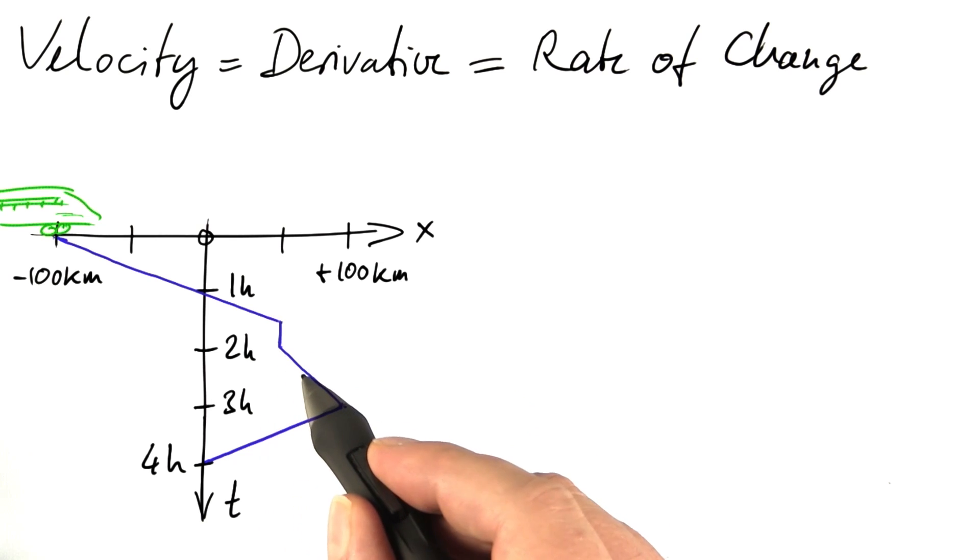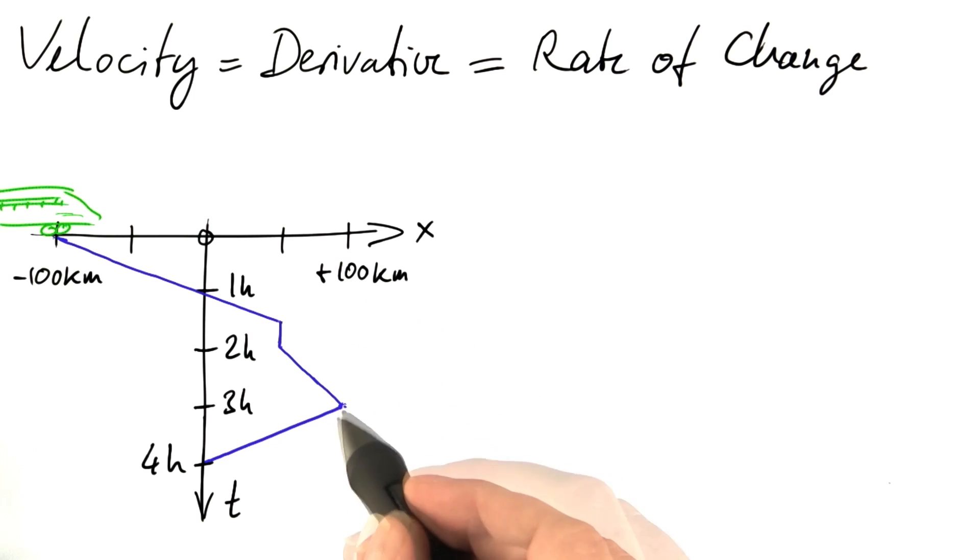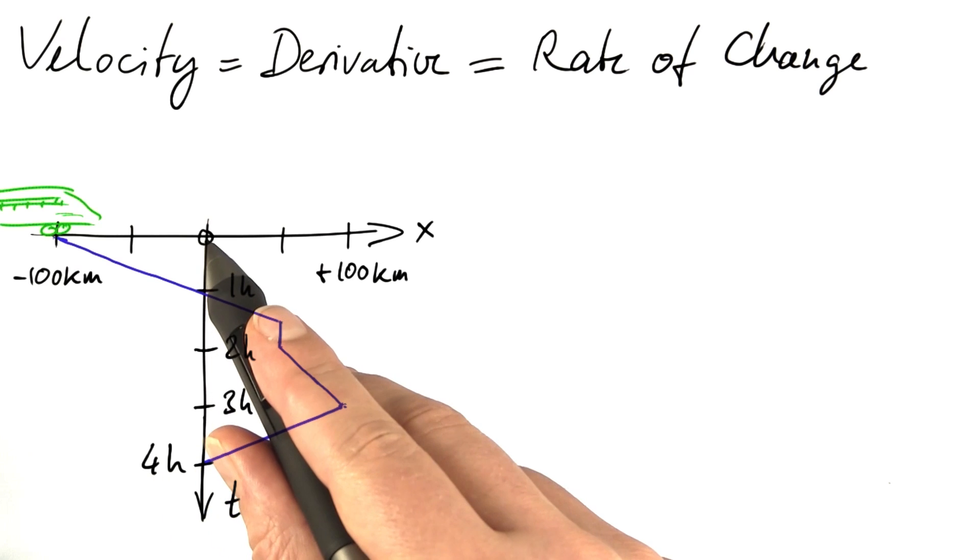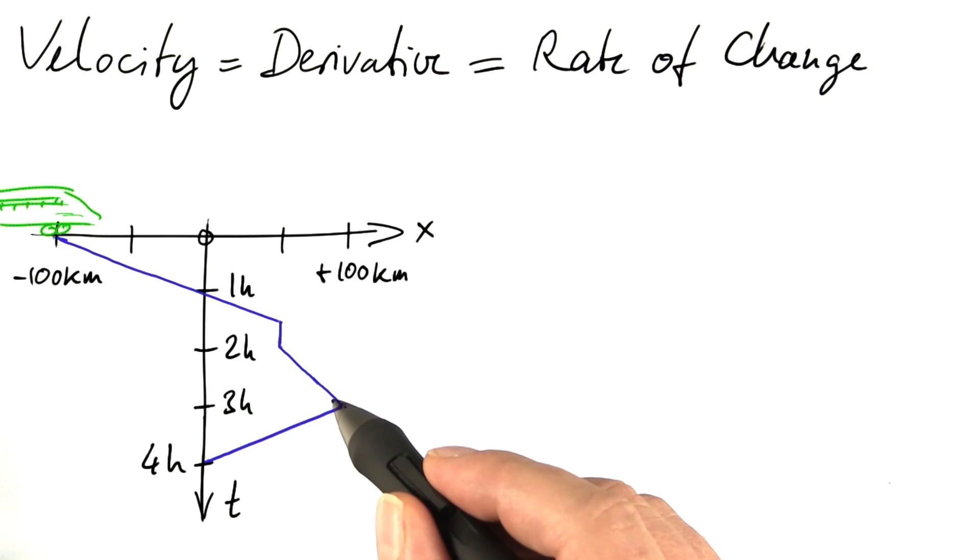It continues somewhat slower for one hour till it reaches that position at plus 100 kilometers, then it immediately returns to the position x equals zero four hours after it started. This is, if you will, a mathematical view of the timetable, of the train's timetable.